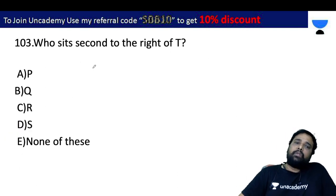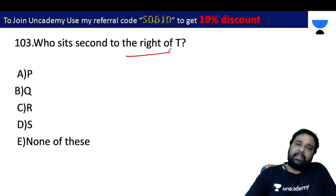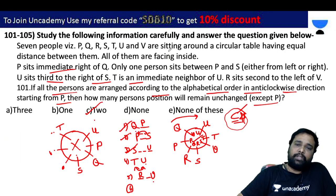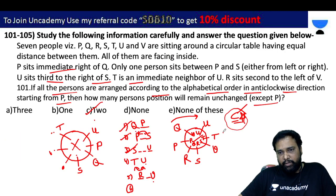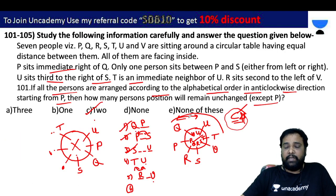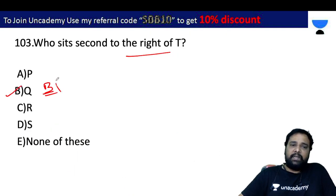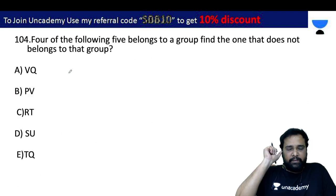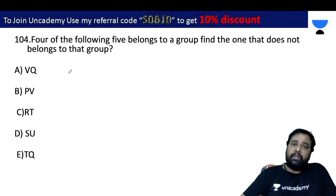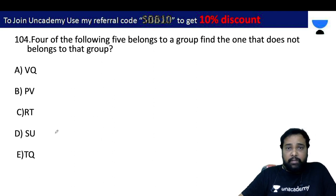Next, question 4 — four of the following five are alike, and one is different. VQ: V and person Q are in the same position relationship (third right). Checking PL and T: if T is the position, then the third right from T gives a certain person. The odd one out is identified.